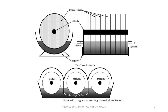This is the schematic diagram of rotating biological contactors. We have circular discs attached to shafts. The system shows a single unit with multiple modules, a top cover and closures, baffles separating the modules, and influent and effluent ports with flow direction indicated.